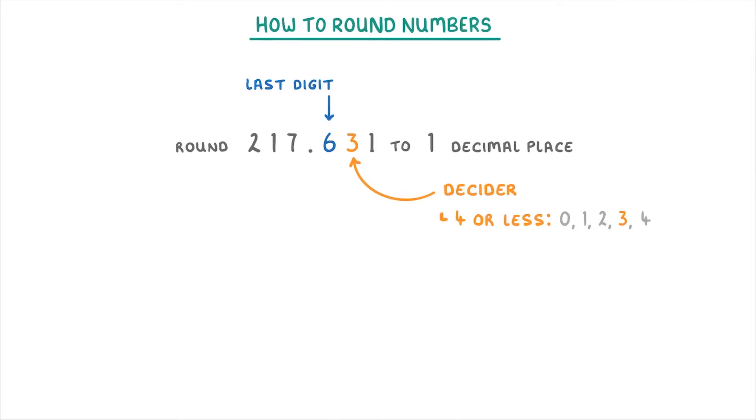Because 3 is in the 4 or less group, it tells us that we're going to have to round down. And remember, when we round down, we keep the last digit as it is. So the 6 stays as a 6. This means that all we have to do is rewrite it as 217.6. And that's it. So effectively, we just got rid of the 3 and the 1.